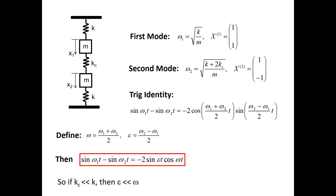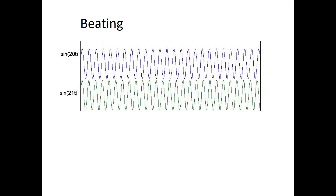If epsilon is small, you have essentially a cosine(ωt) whose amplitude is varying as a sine curve, because sine(εt) varies very slowly compared to cosine(ωt). Now here we have two sine curves of slightly different frequency, and we're going to subtract them from one another. Initially the two peaks are aligned, so when you subtract these curves you'll get essentially zero.